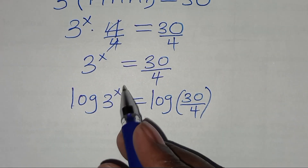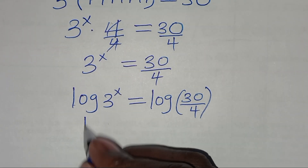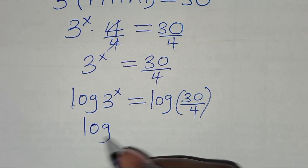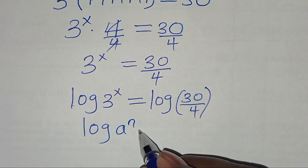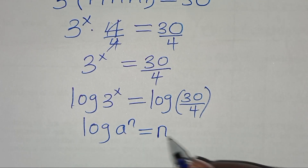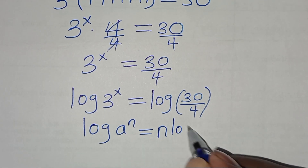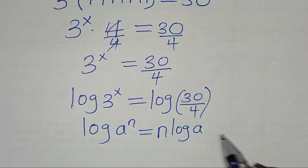Now log 3 to the power x is in the form of log a to the power n, which we can express as n times log a.